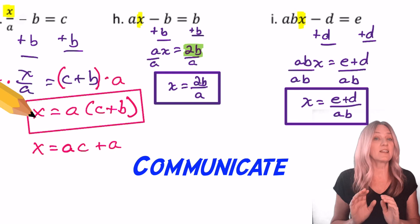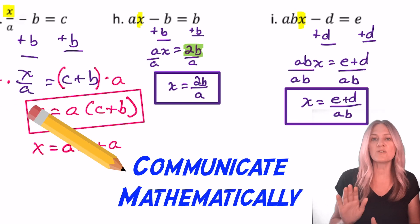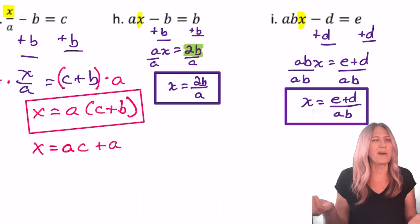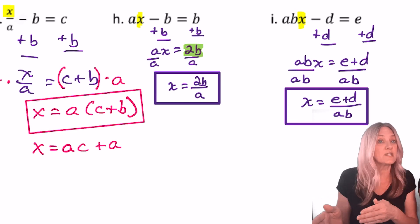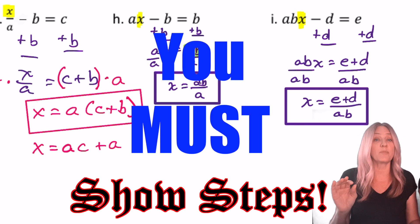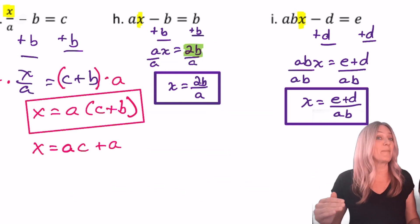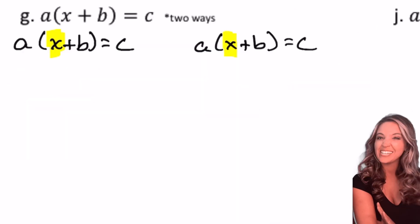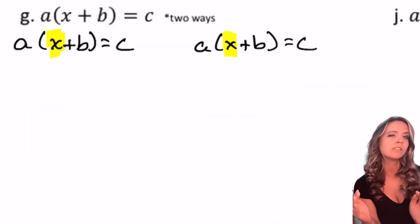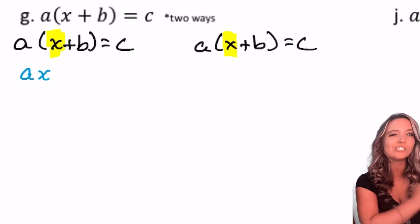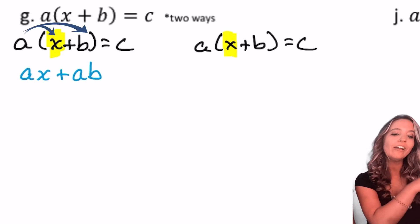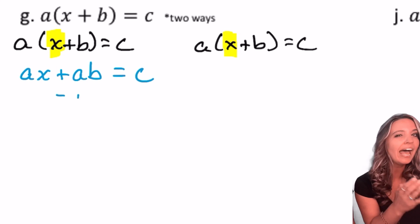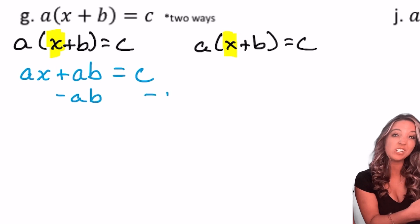As we continue through the examples — communicate mathematically! It's one of our major national math standards. Even if something seems like you could do it in your head or in two steps at once, don't. We need to see the properties of equality exercised in the proper order. Also be sure you're pausing — that's how you learn. On this next one, we could really solve in two different ways. The first way: I see those parentheses and immediately think to distribute. So I distribute a through and get ax plus ab equals c.